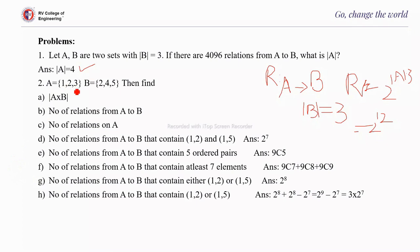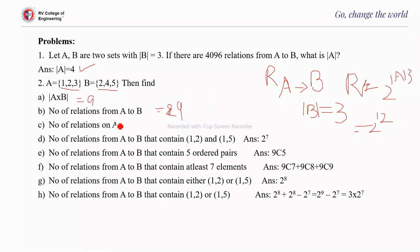Second problem: let A = {1, 2, 3} and B = {2, 4, 5}. The size of A×B is |A| × |B| = 3 × 3 = 9. The number of relations from A to B is 2^9, since each of the 9 elements of A×B may or may not be present. The number of relations on A is also 2^9, because |A×A| = 9.